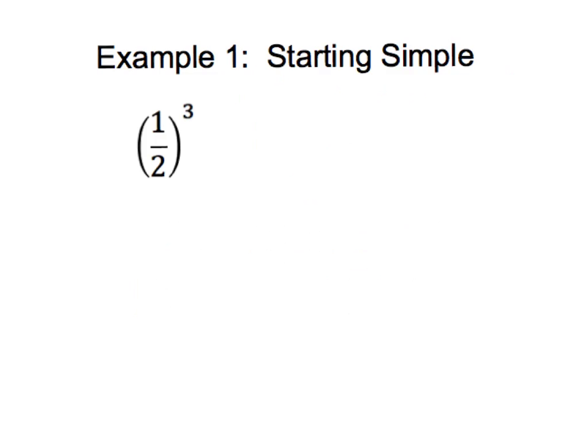Our first example is going to be starting off simple, and I think this example will show how the quotient to a power rule works. We know that one-half to the third power — the fraction one-half is considered a quotient. I like to think about that exponent 3 almost like the distributive property; it's going to apply to both the numerator and the denominator. One-half to the third power means one-half times one-half times one-half. Multiplying fractions, we multiply all of our numerators together: one times one times one is one, and all of our denominators together: two times two times two is eight.